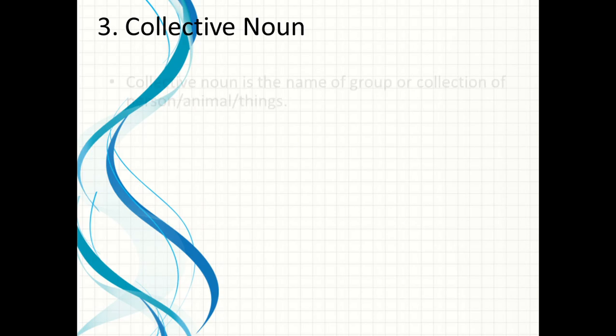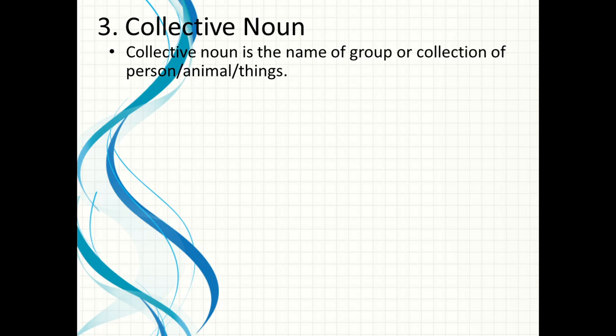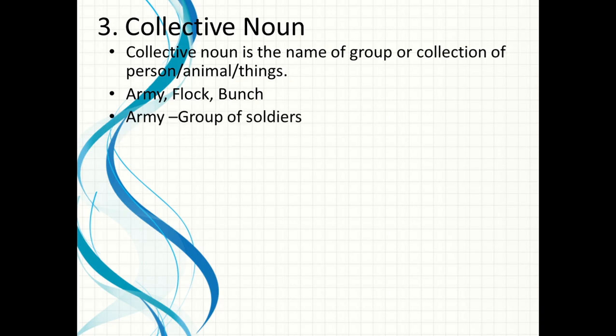Collective noun is the name of a group or collection of persons, animals, or things. Jab bhi kisi group ya collection ho — kisi person ka, kisi animals ka, ya kisi thing ka — to un sabhi chezon ko hum collective noun kehte hain. For example, army, flock, bunch. 'Group of soldiers' is known as army. Army ek bohat bada group hai jis mein bohat sari soldiers hoti hain, so army is a collective noun.